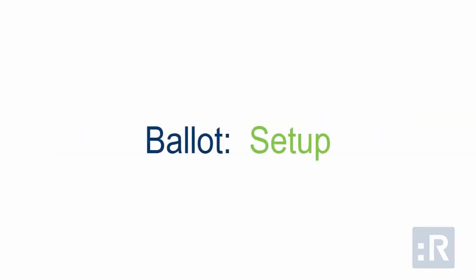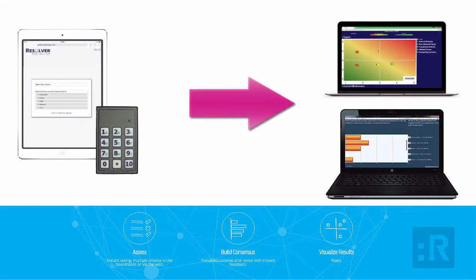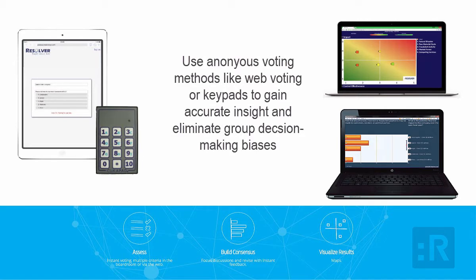Welcome to Resolver Ballot. Over the last 20 years, Ballot has helped clients perform risk assessments and risk assessment workshops more effectively and efficiently. Traditional risk assessments are often prone to group decision-making biases that limit the accuracy of the insights gained. Ballot is an anonymous voting tool that allows you to eliminate these biases, benefit from equal representation, and encourage candid responses. The result is an accurate exchange of information, improved communication, and more efficient and accurate risk assessments.